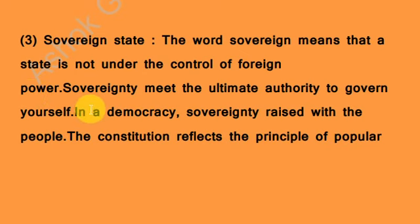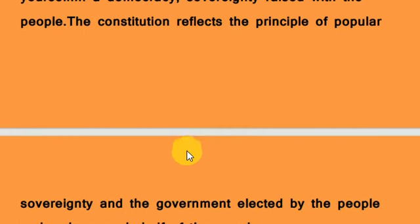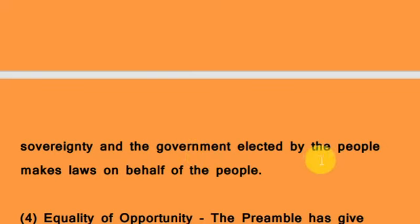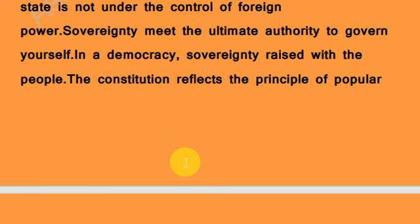Our country is not controlled by any other foreign country — our citizens have sovereignty resting with them. Our people have the power to rule themselves. The Constitution reflects popular sovereignty: the government elected by the people makes laws on behalf of the people, not any foreign country. Our government and our people make laws for our country — that is the characteristic of a sovereign state.